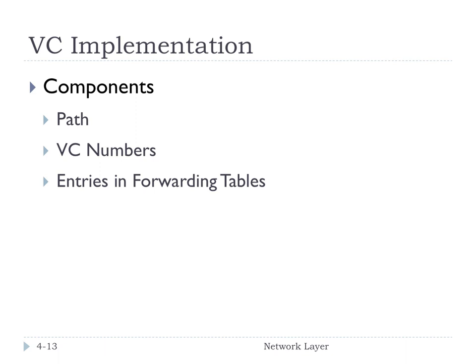These are some of the important components of a virtual circuit. You need the path from source to destination. You also need the virtual circuit numbers for each link along the path — different links are going to have different virtual circuit numbers. And then you need all of the entries in the forwarding tables that maintain what the outgoing and incoming virtual circuit numbers are for a particular kind of path.